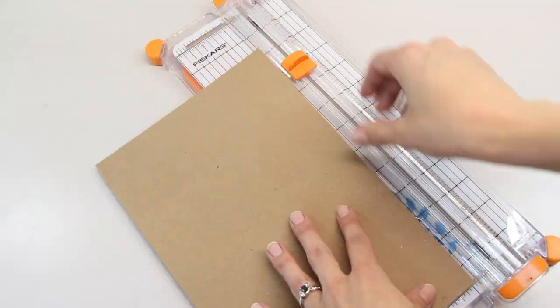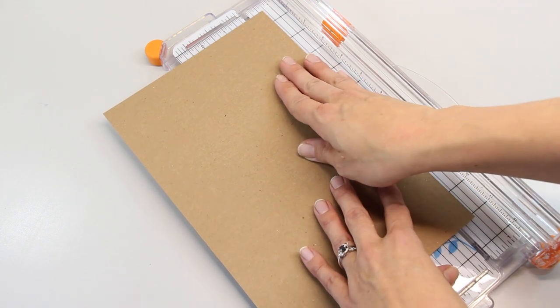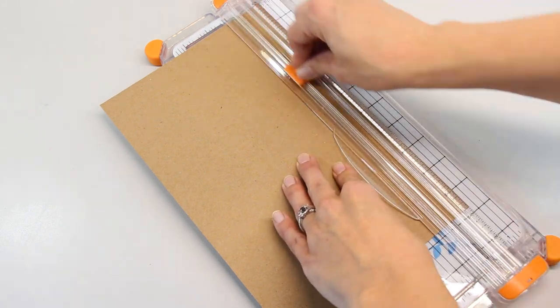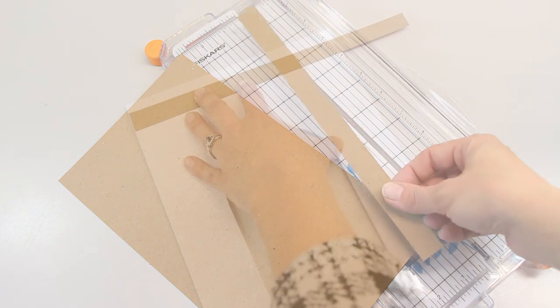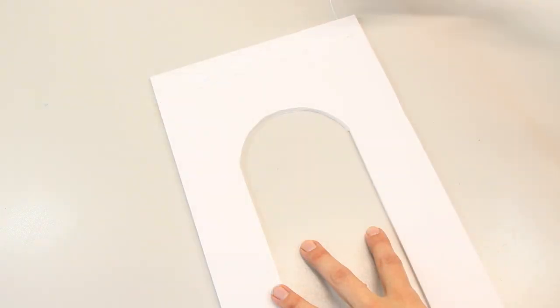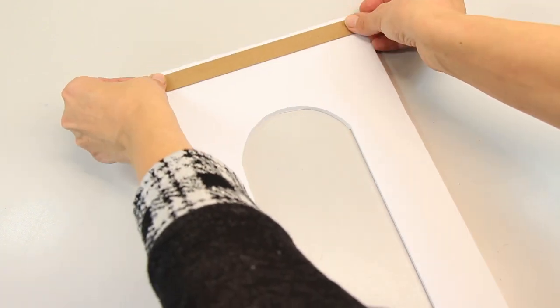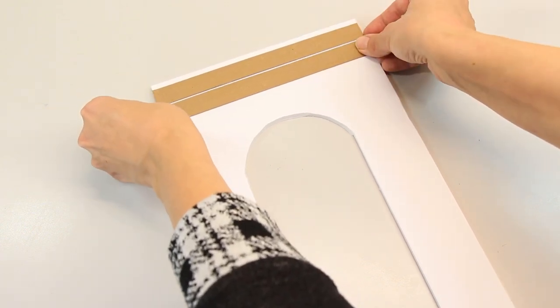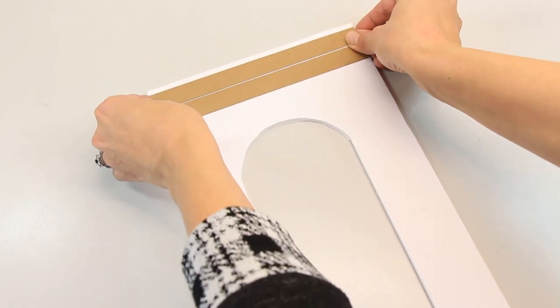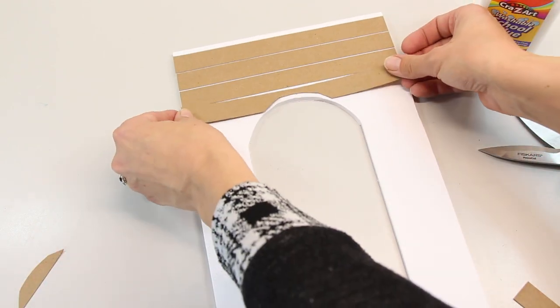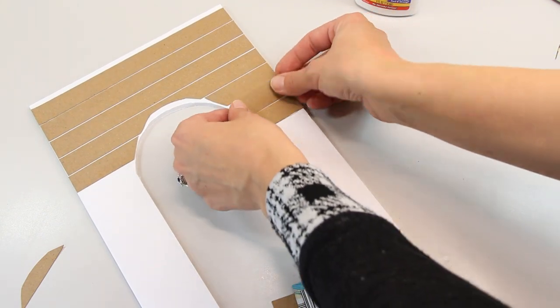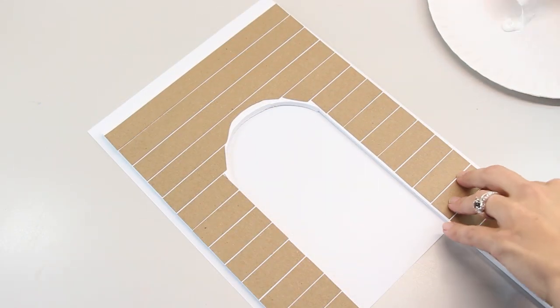Next, I'm going to shiplap the wall. Take thin recycled cardboard from a cereal box and cut it into three-fourth-inch strips. Cut your pieces to size and glue them down using school glue. Make sure to leave a thin gap between the boards. Once the glue is dry, paint it white.